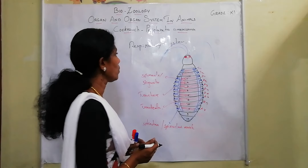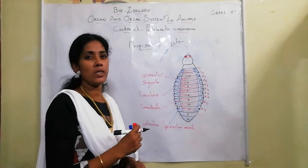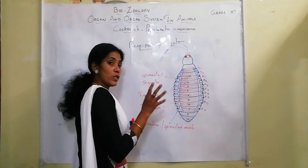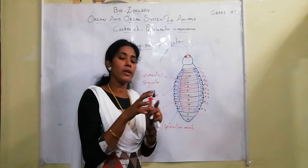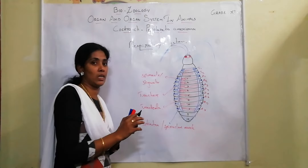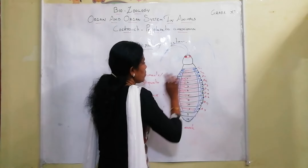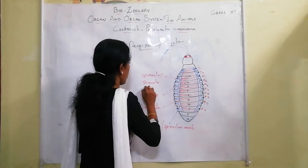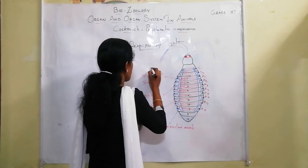The respiratory system is relatively well developed compared to other insects. It consists of tracheal tubules. These tracheal tubules open to the outside through openings called spiracles or stigmata. There are 10 spiracles in total: 2 are in the thoracic region (T1 and T2), and 8 are in the abdominal segments (A1 through A8).